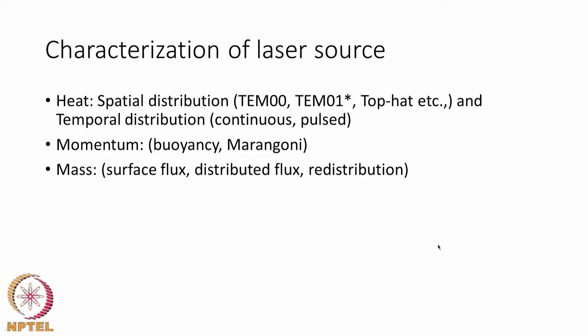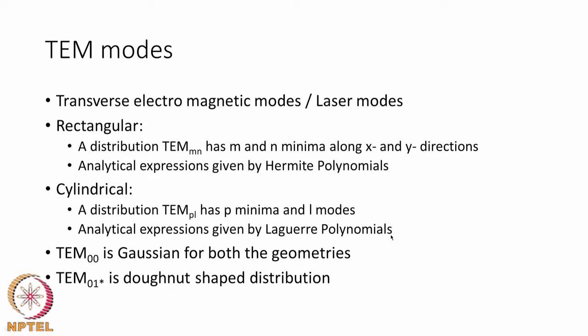Therefore, one must identify the laser heat source description quite accurately. Direct measurements are possible in an experimental facility to know the heat source distribution for a given lens, but such equipment may not always be available. One must look up the lenses used to know what kind of laser heat source is emerging. The TEM modes can be described using either rectangular mode or cylindrical mode — cylindrical if there is axisymmetry, rectangular if not.